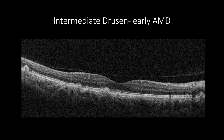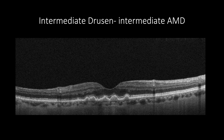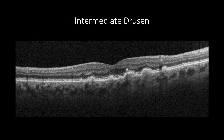Intermediate drusen are when the drusen size is between 63 and 124 microns, and can be responsible for early AMD when there is a combination of small and few intermediate drusen. However, when there are numerous intermediate drusen, then the AMD is staged as intermediate. Intermediate and larger drusen are usually called soft drusen, which appear with a more homogenous content and are associated with disruption of the ellipsoid zone, responsible for decreased vision. In contrast to hard drusen, soft drusen can be associated with intraretinal pigmentation, which appears as hyperreflective foci in the outer retinal tissues, which may cast shadow artifact in some cases.